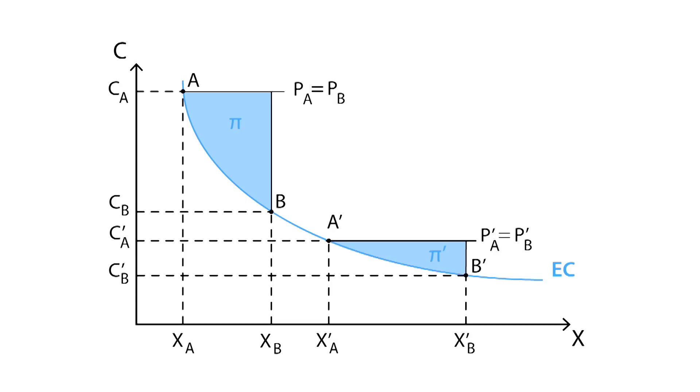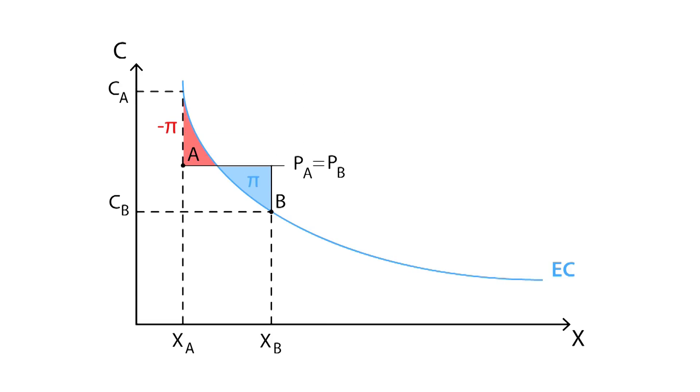However, B is able to anticipate all these scenarios, and therefore, firm B will try to banish firm A from the market.